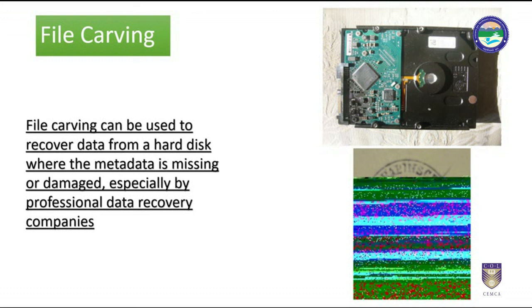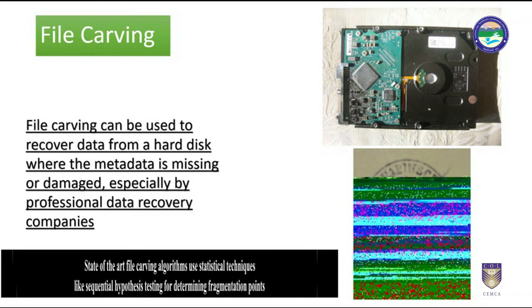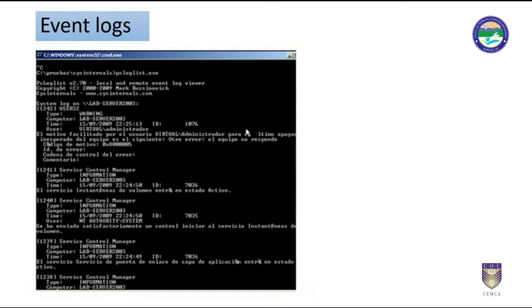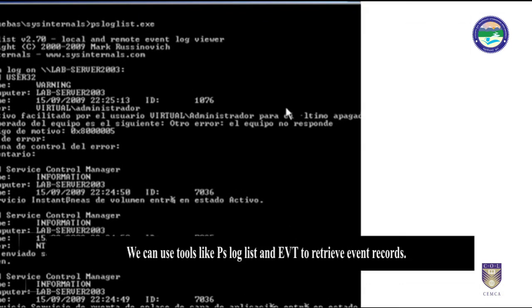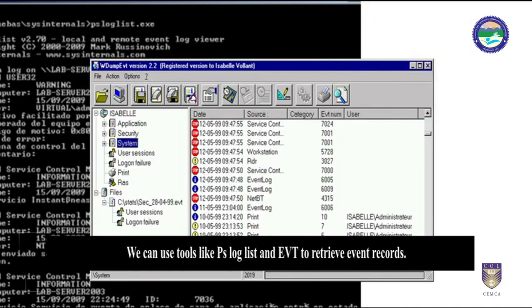File carving is a highly complex task with a potentially huge number of permutations to try. To make it tractable, carving software makes extensive use of models and heuristics — necessary both for execution time and accuracy of results. State-of-the-art file carving algorithms use statistical techniques like sequential hypothesis testing for determining fragmentation points. Event logs are stored in metadata files. Entries can be retrieved depending on how refining is carried out by investigators. Event logs can be configured for minimal to maximum events and durations. Tools like PS Loglist and EVT can be used to retrieve event records.